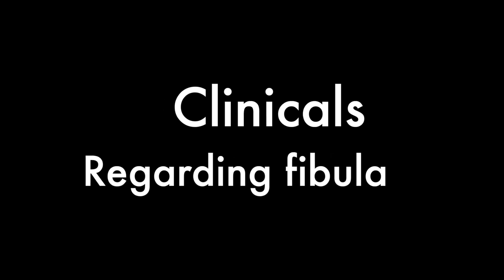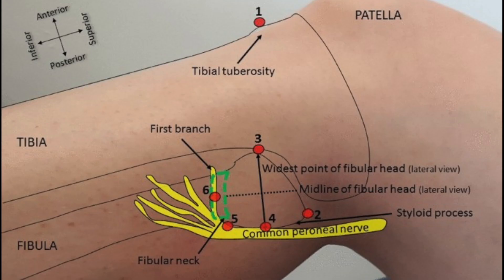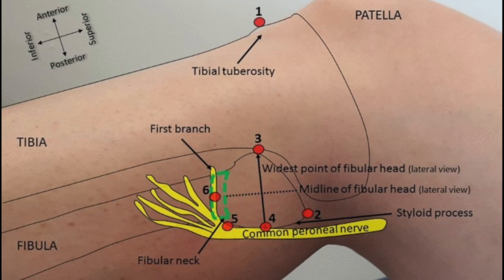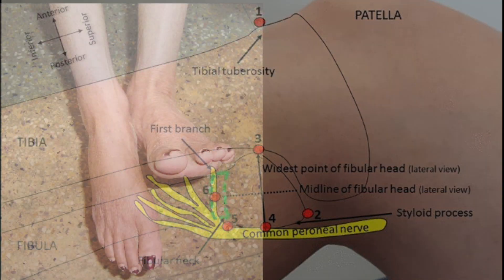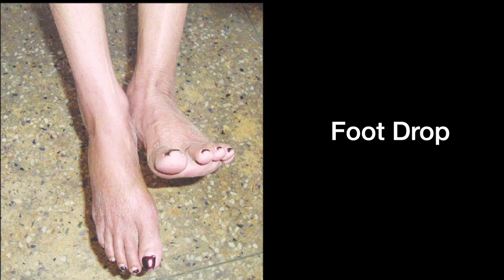The common peroneal nerve can be rolled against the neck of the fibula. This nerve is commonly injured by trauma to the neck of the fibula, which leads to foot drop.